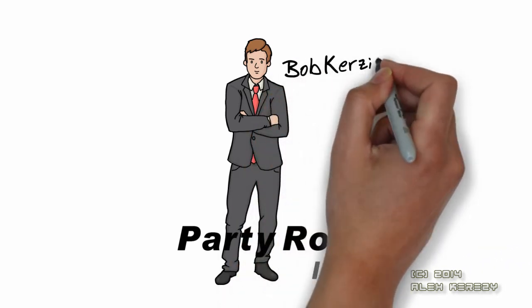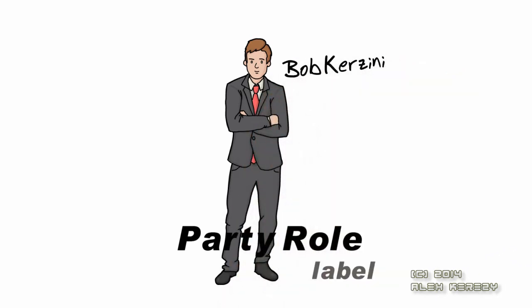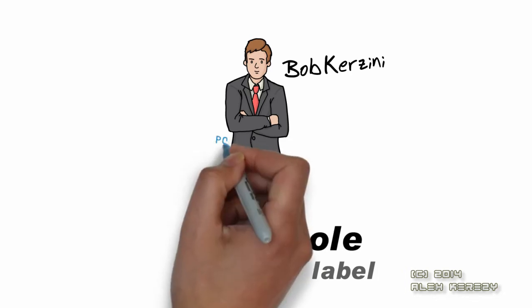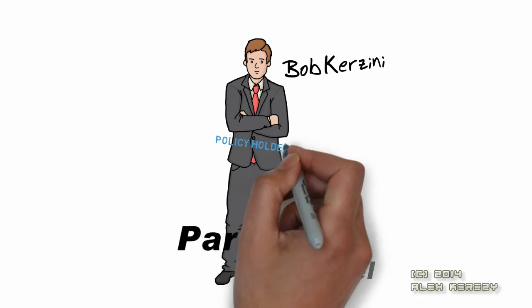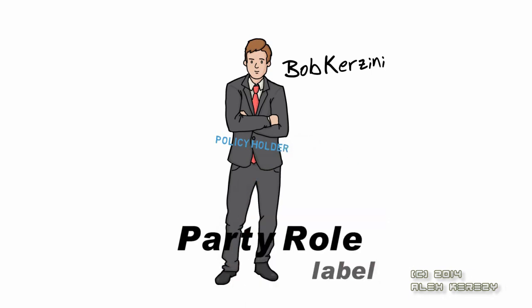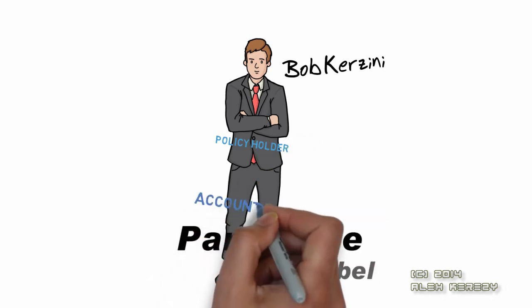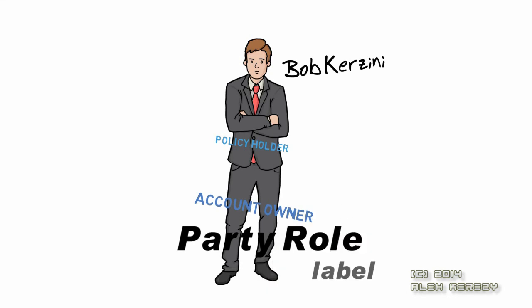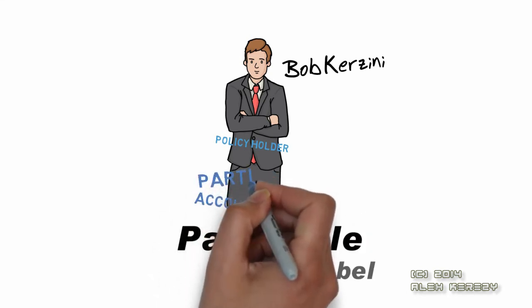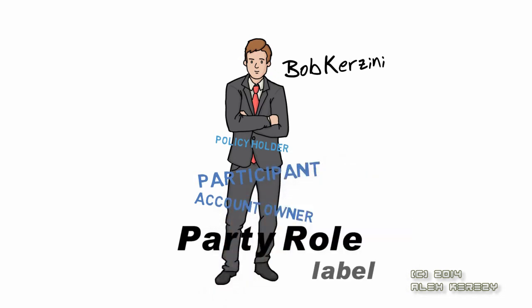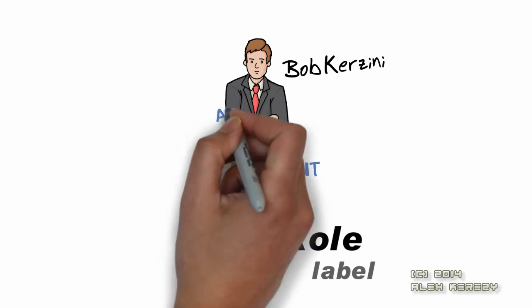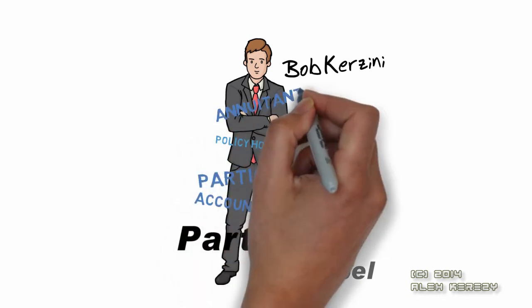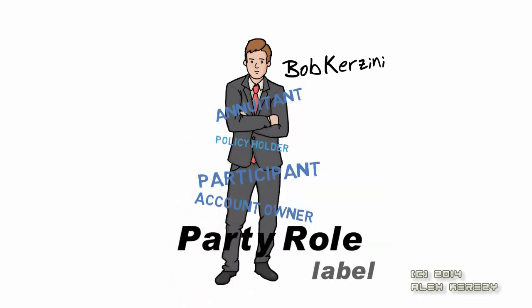Let's take Bob Curzini, for example. In relationship to his life insurance policy, Bob is a policyholder. In relationship to his bank account, Bob is the account owner. In relationship to his 401k, Bob is a participant. And in relationship to his after-tax annuity, Bob is the annuitant.